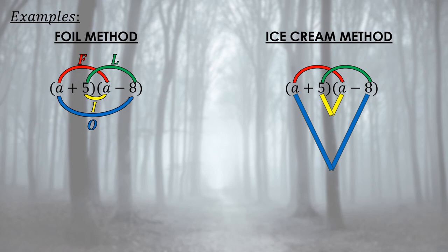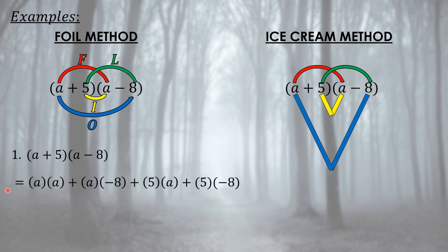Let's use the given examples to apply both the FOIL method and the ice cream method, to see if they give the same result. First example: (a + 5)(a − 8). Both (a + 5) and (a − 8) are binomials. Let us first use the FOIL method.